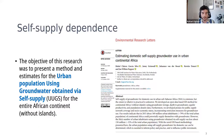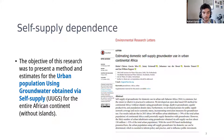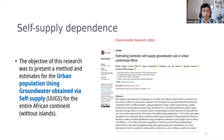Because of this, the objective of this research was to present a method and estimates of urban population using groundwater obtained by self-supply for the entire African continent, excluding islands. Here is the published paper in case you want to dig further — these are just 10 minutes, so I'll briefly explain it.